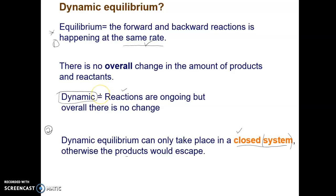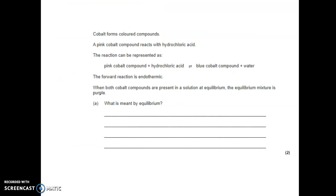Automatically dynamic means the reaction is still going on. An example of this is in this particular question, a common exam question, particularly at GCSE. You've got a question where it says cobalt forms colored compounds. A pink cobalt compound reacts with hydrochloric acid.